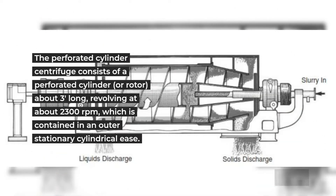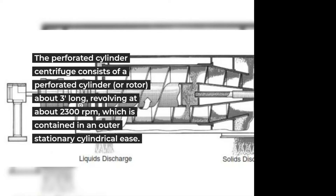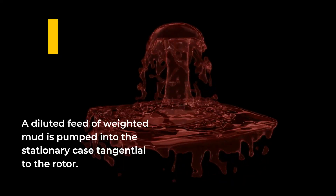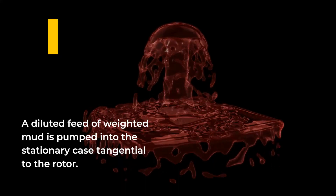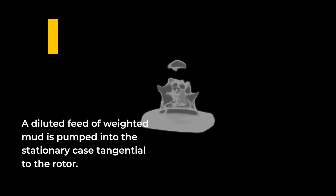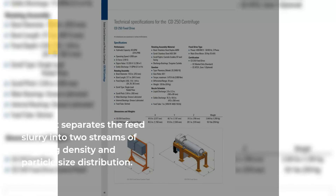The perforated cylinder centrifuge consists of a perforated cylinder or rotor about three feet long, revolving at about 2,300 revolutions per minute, contained within an outer stationary cylindrical casing. A diluted feed of weighted mud is pumped into the stationary case tangential to the rotor. The unit separates the feed slurry into two streams of differing density and particle size distribution.